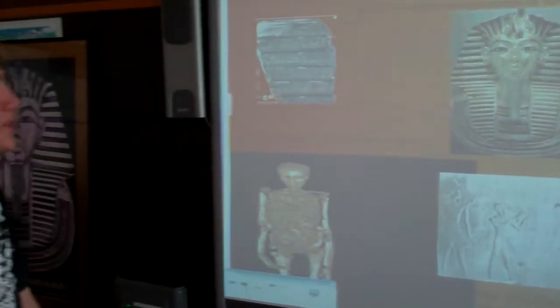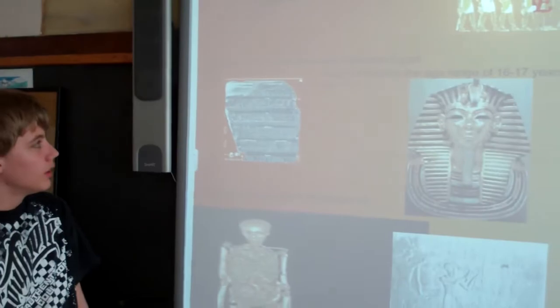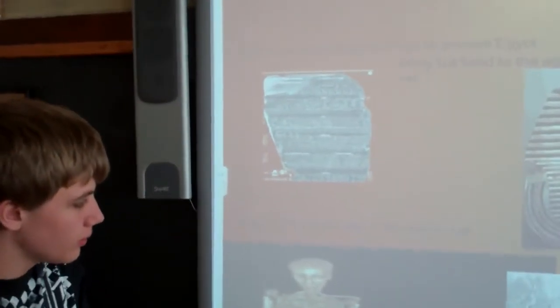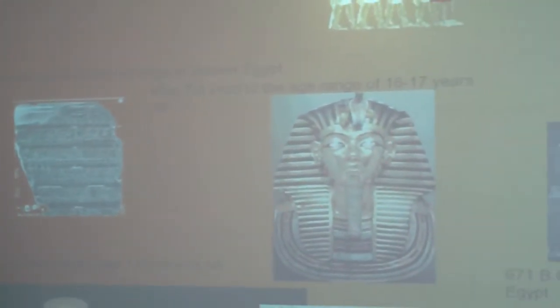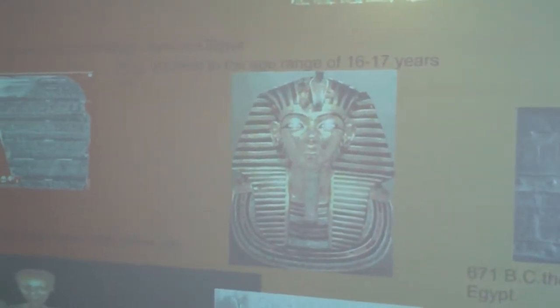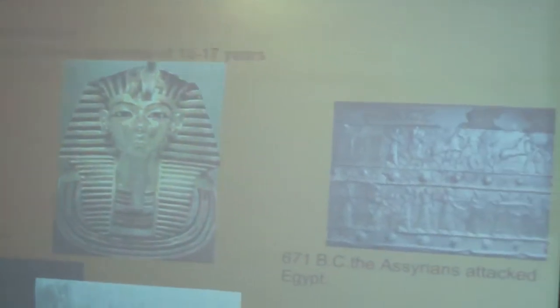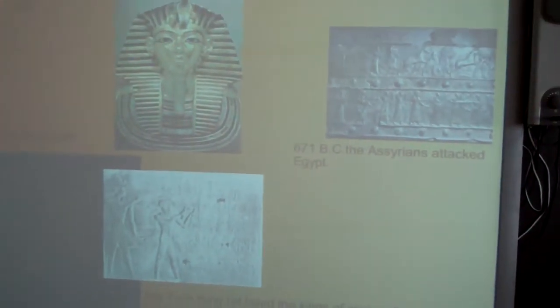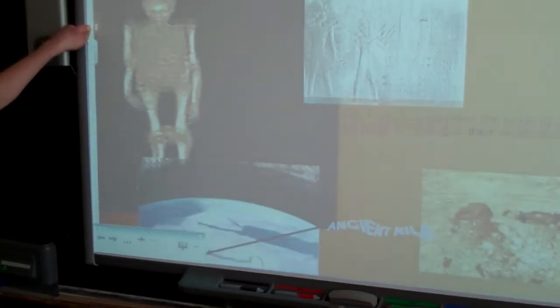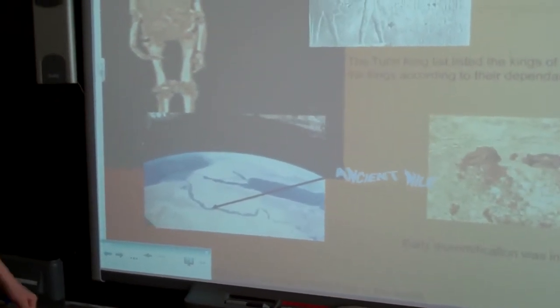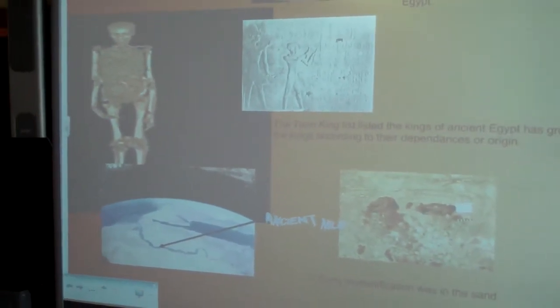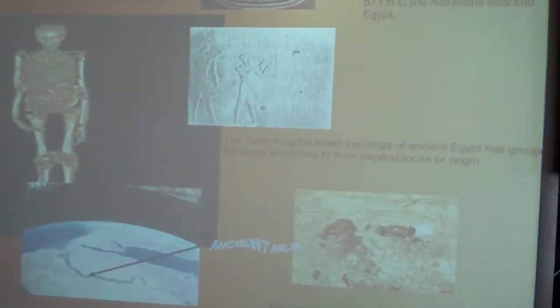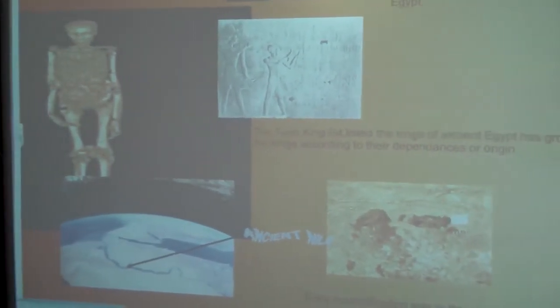Fast facts about Egypt. Palmer stone listed the kings of ancient Egypt. Right here is the Palmer stone. King Tutankhamen lived to the age range of 16 to 17 years old. In 671 BC, the Syrians attacked Egypt. King Tut's height was 1.69 meters tall. The Turin king list listed the kings of ancient Egypt and grouped the kings according to their descendants or origin.